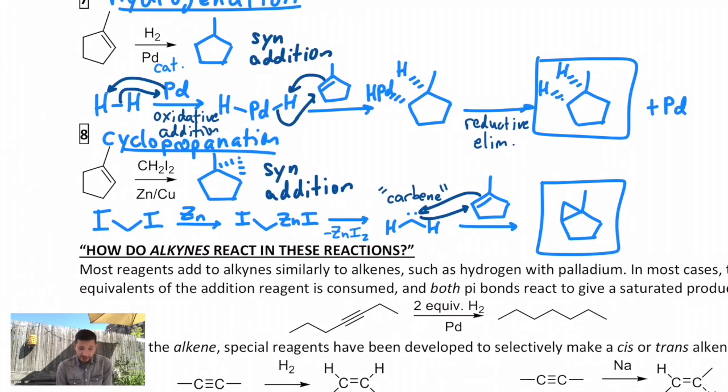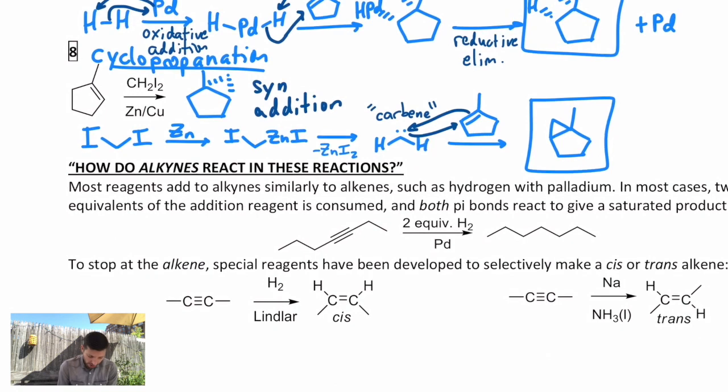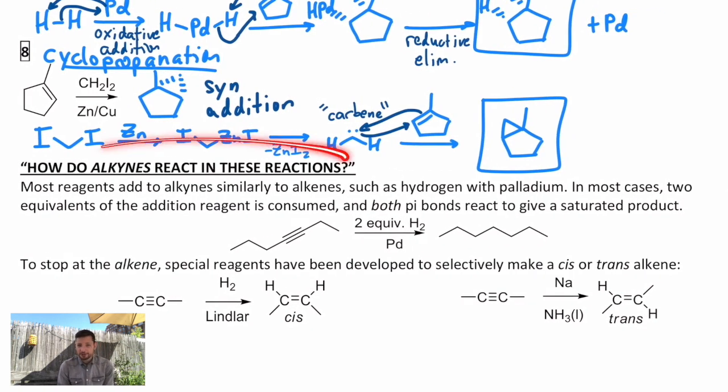Let's finish up by looking at some alkyne reactions. How do alkynes react in these reactions? For the most part they do the same kind of thing. The difference is you have two pi bonds in an alkyne as opposed to just one in an alkene. So many of these additions happen twice. You get over-addition. It's often quite hard to stop halfway and only react one of the pi bonds.